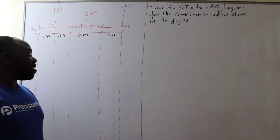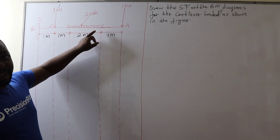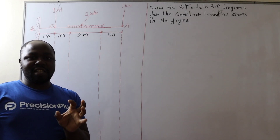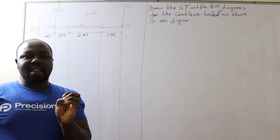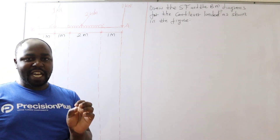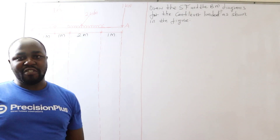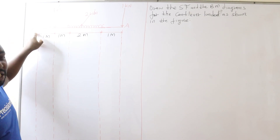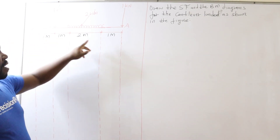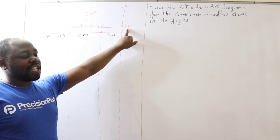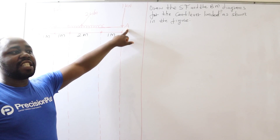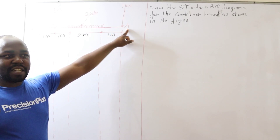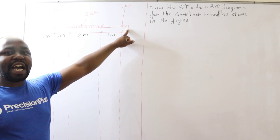Now in this case we are given a cantilever. Remember a cantilever is a beam that is fixed on one end and free on the other end. In this case our cantilever is fixed at point B but at point A it is free. So in other words we can say that it is an overhanging beam.